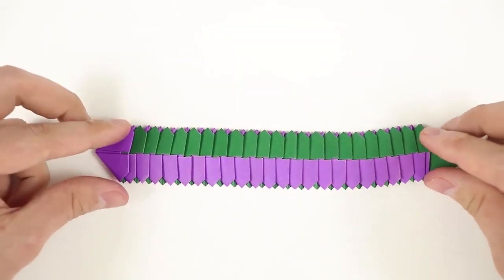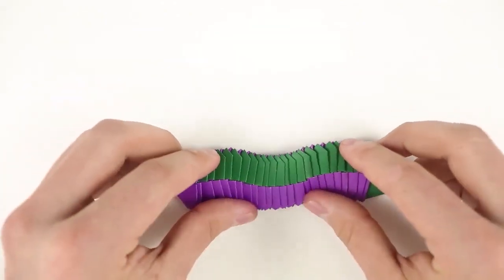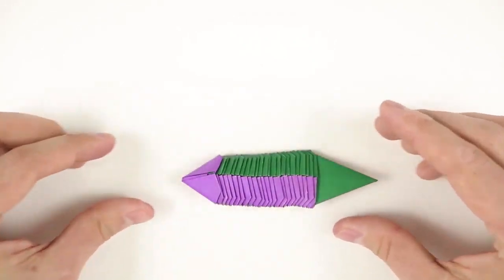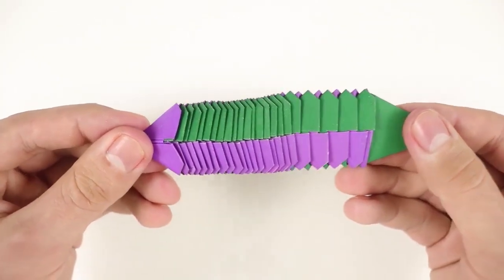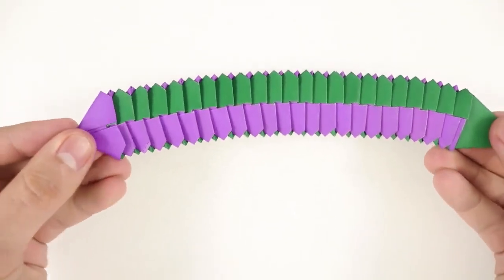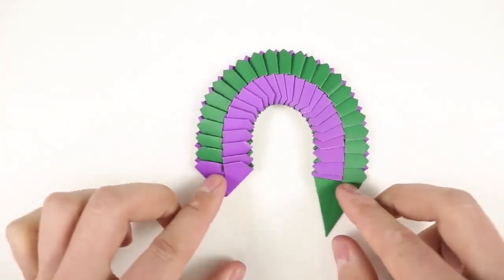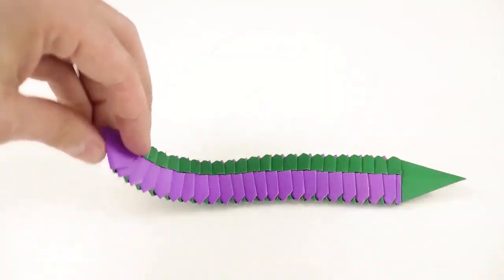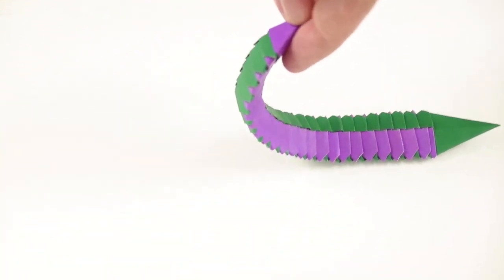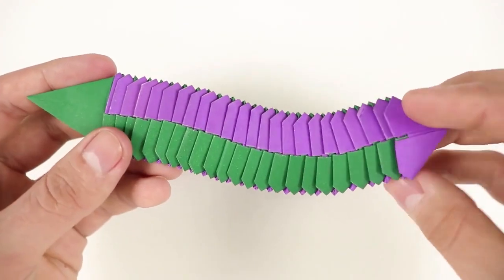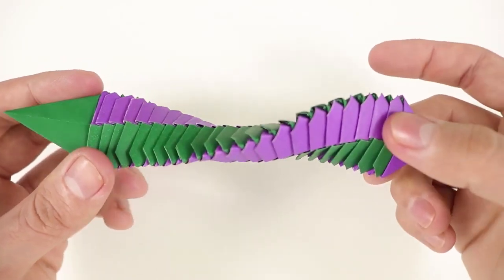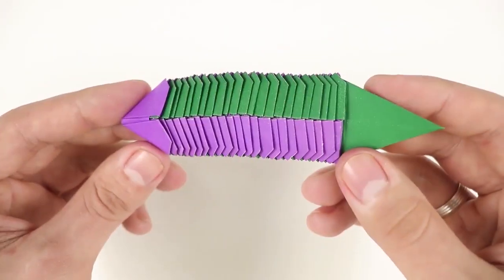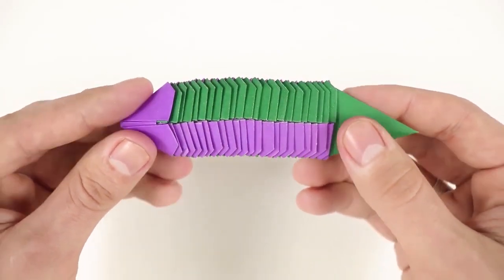So, our origami snake is ready! It can contract, expand, bend in either direction, it can also twist, basically, it can do anything you want, and has an amazing result.